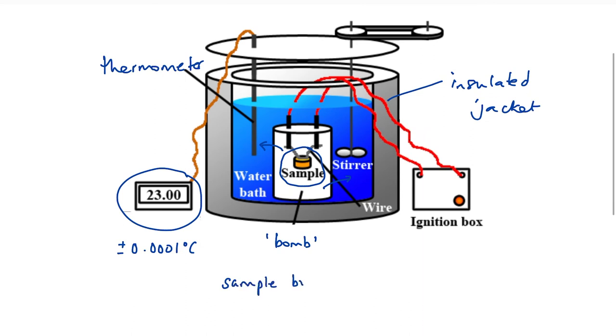So what happens is that the sample is burnt in pure oxygen. The sample burnt in oxygen rather than air. So we're going to get complete combustion, not incomplete combustion. And the heat released is used to heat up this known volume of water inside an insulated jacket. So we get a far more accurate reading.